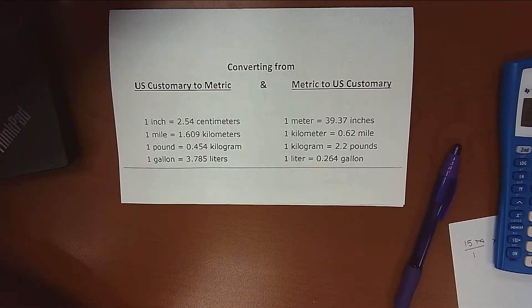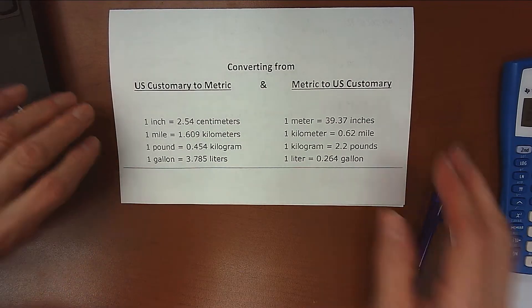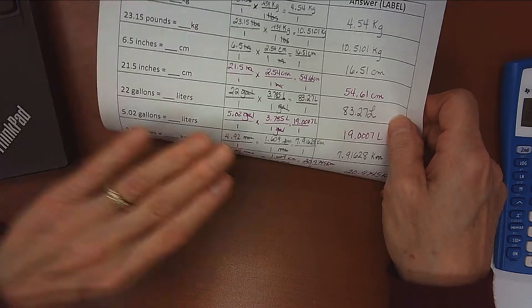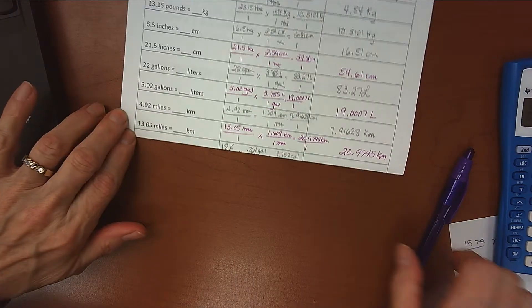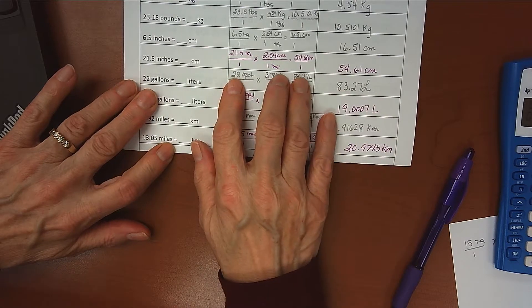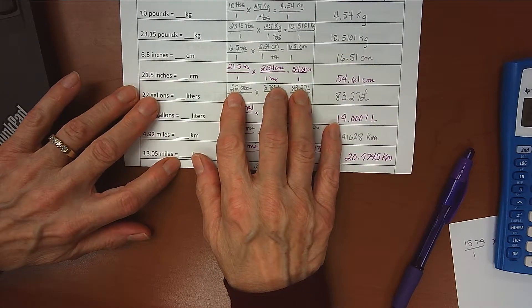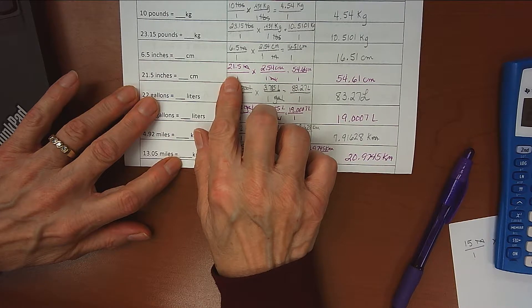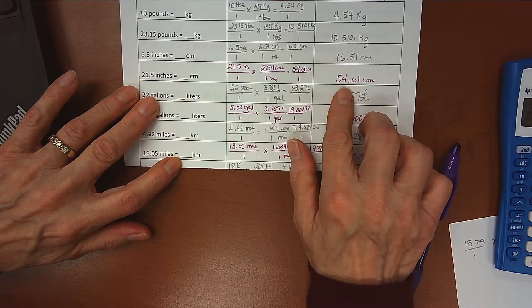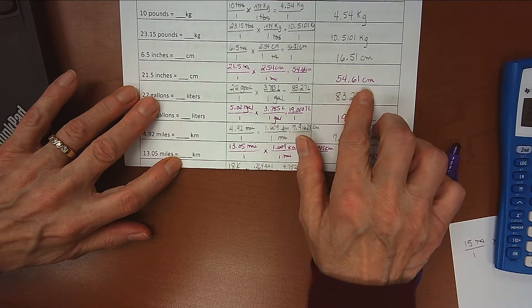Alright guys, let's see how those practice problems went for you. On the first one where you had to convert 21.5 inches to centimeters, you can see how I did my conversion here. I multiplied 21.5 inches by 2.54 centimeters over 1 inch and my answer was 54.61 centimeters.